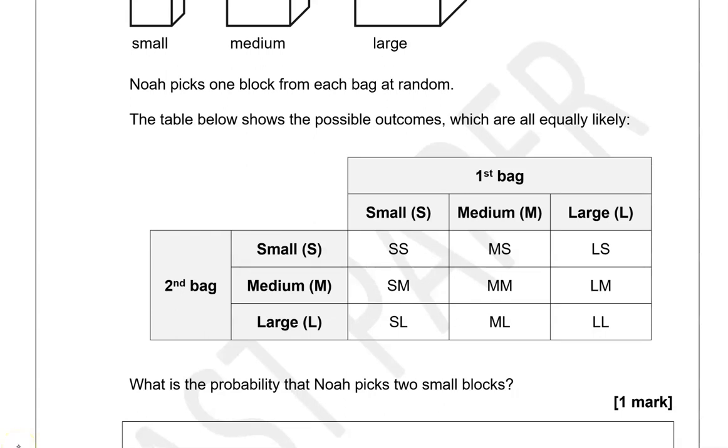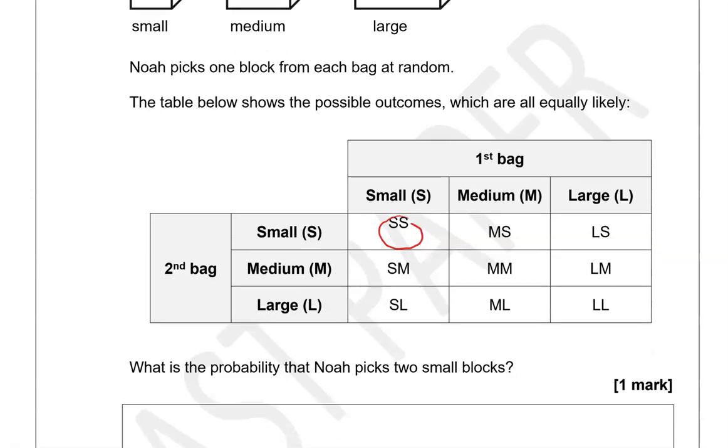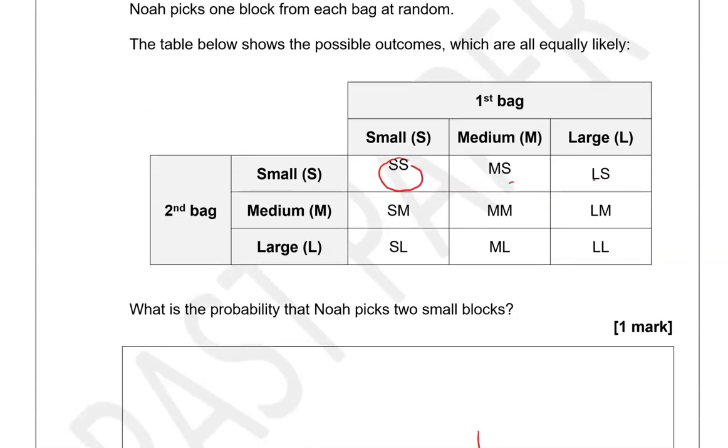So we've got 1st bag, small, medium, large. 2nd bag, small, medium, large. So we're looking for small and small, which would be this one out of the 1, 2, 3, 4, 5, 6, 7, 8, 9 possible outcomes.